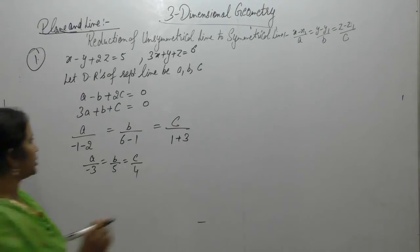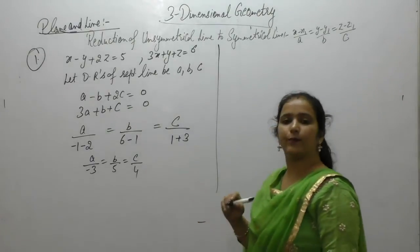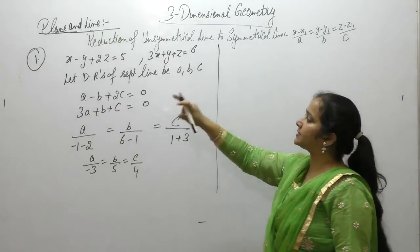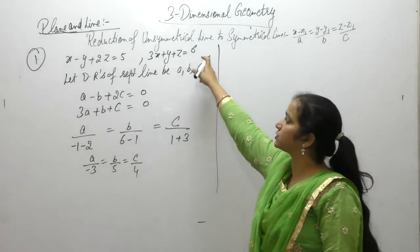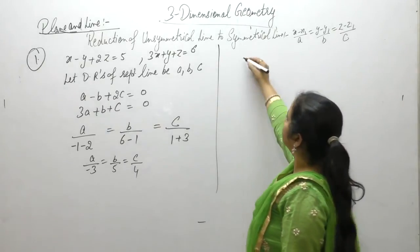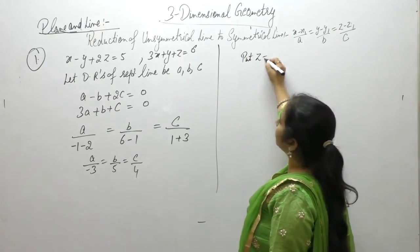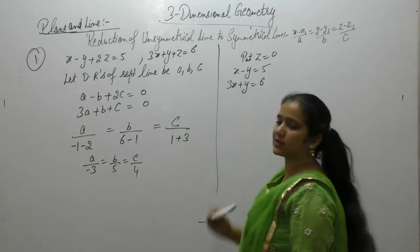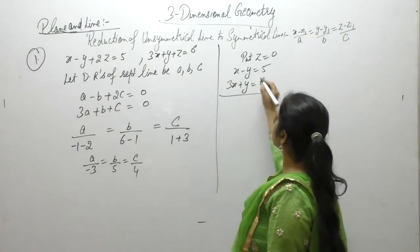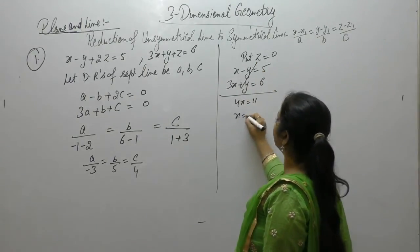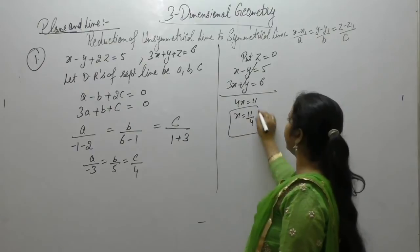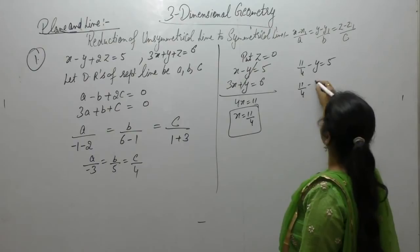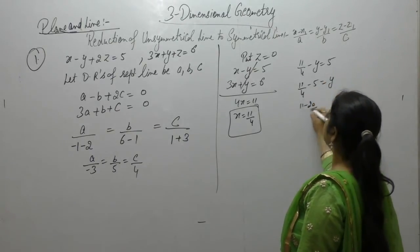So, these are the direction ratios. Now, in order to find the point through which the line pass, we can put any of the coordinates x, y or z equals to 0 in the given equations of plane. So, put z is equals to 0, then we have equation 3x plus y is equals to 6. Now, solve these equations. 4x is equals to 11, we get the value of x is 11 by 4. 11 by 4 minus y, 11 by 4 minus 5, 11 minus 20.